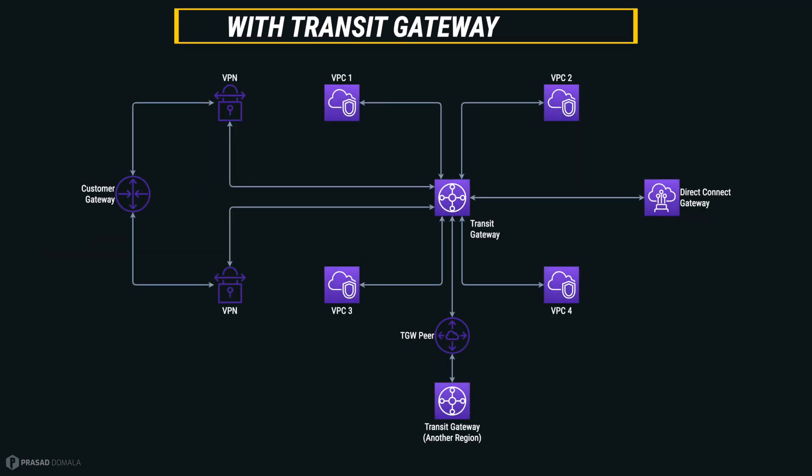AWS Transit Gateway simplifies this drastically. You only need to create and manage a single central gateway and attach all the VPCs, VPNs, and even Direct Connect Gateways to your Transit Gateway. Transit Gateway basically acts as a hub, and we can centrally control traffic flow among all connected VPCs, VPNs, and Direct Connect Gateways. We can also create a peering with Transit Gateways in another region and gain access to all the resources attached to that Transit Gateway.